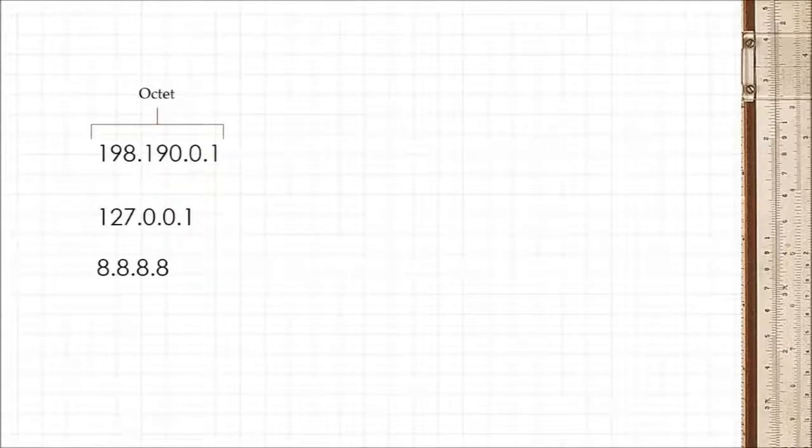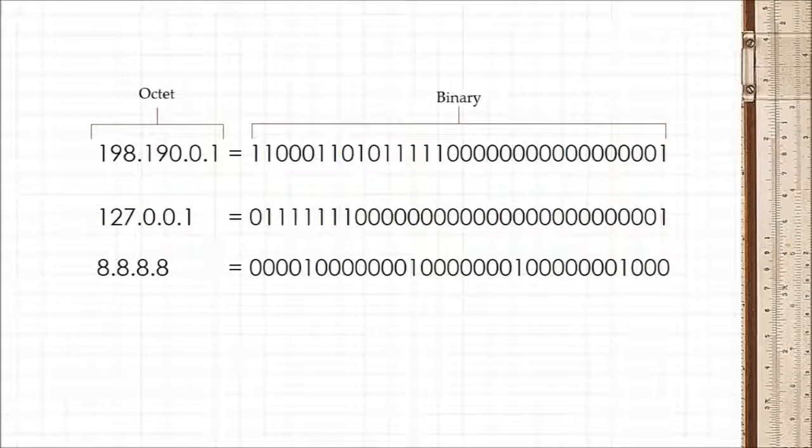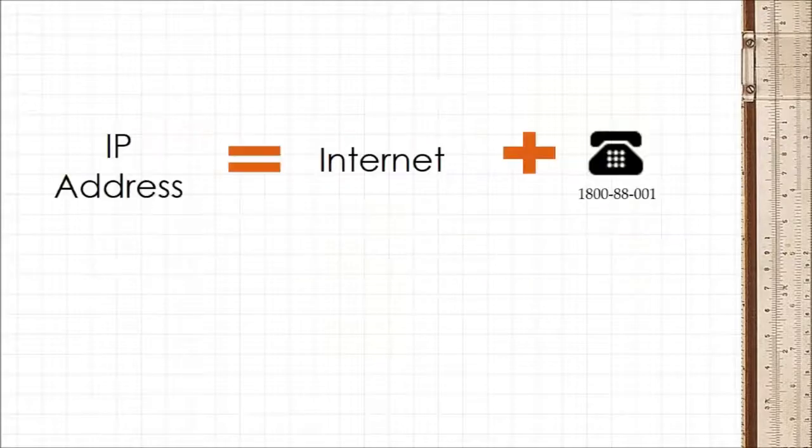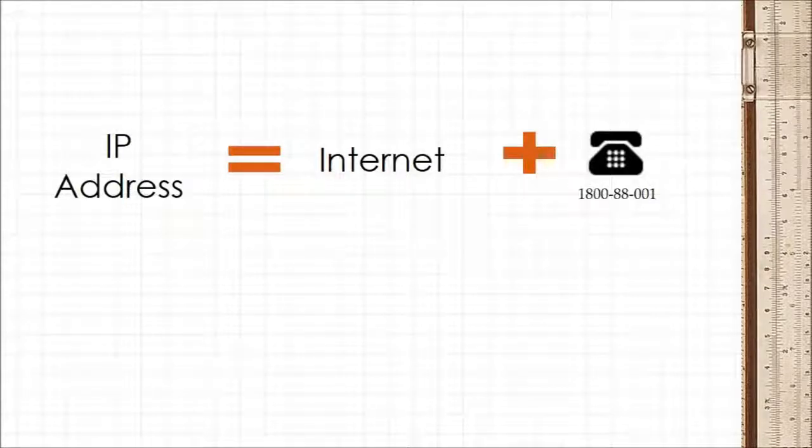The octet system, though, is a simpler way to represent a 32-bit number. Underneath it all, IP addresses are nothing more than internet phone numbers that allow computers on the internet to communicate with each other.